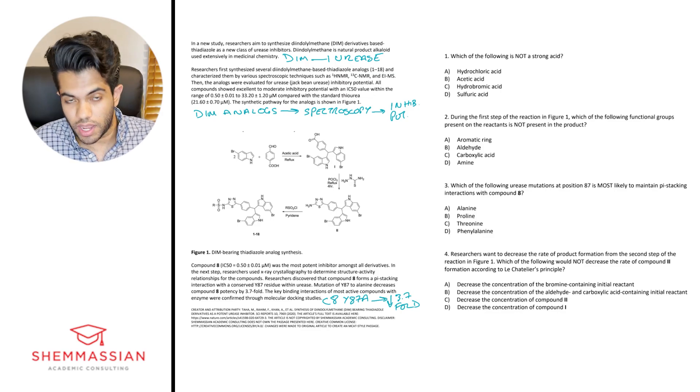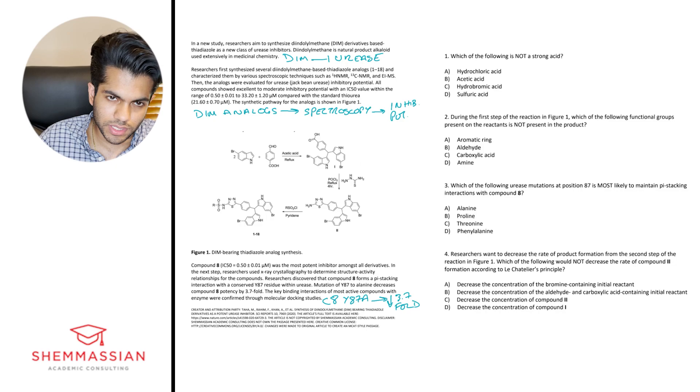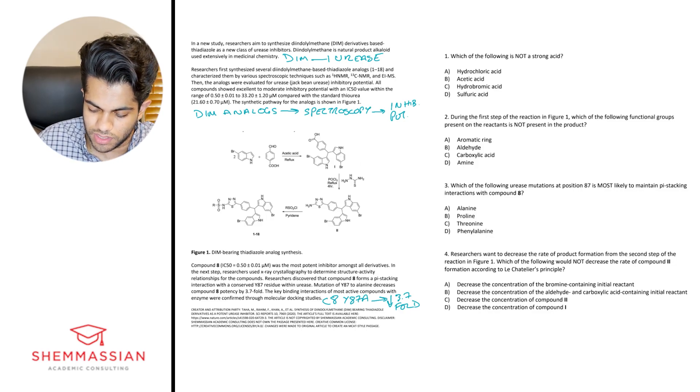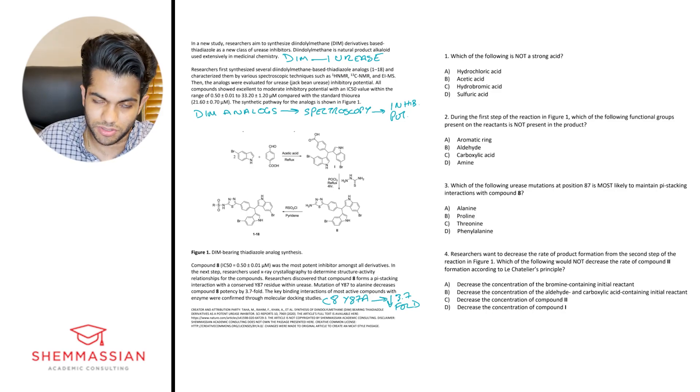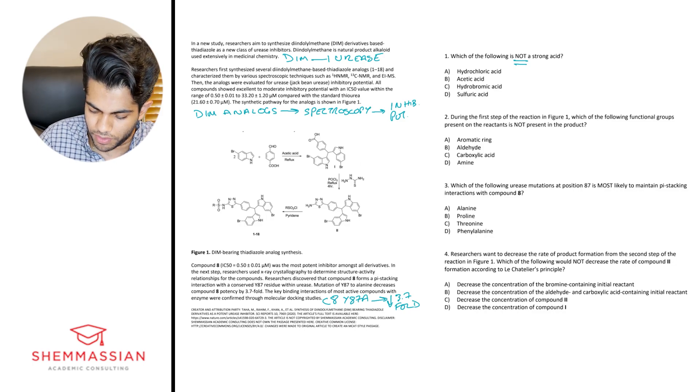Alright. So now with the passage out of the way, let's go ahead and dive into the questions. So question one, which of the following is not a strong acid? So when I see not, least, except words like that in a question stem, I always like to highlight them just because the MCAT is such an exhausting exam. It's very easy to overlook a small detail like that. And then you might spend a lot of time digging through the question, the answer choices and looking for which one is a strong acid, right? So I like to just highlight it on my exam for not except least words like that.